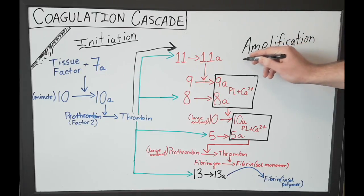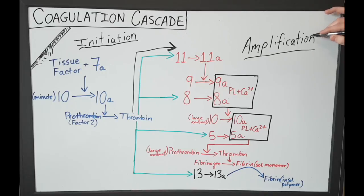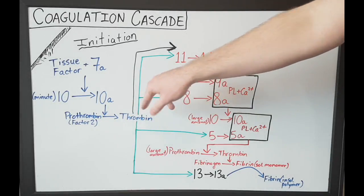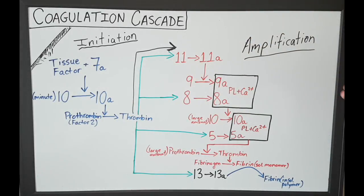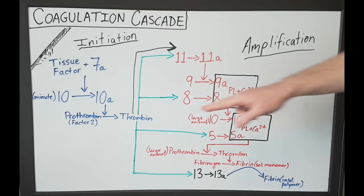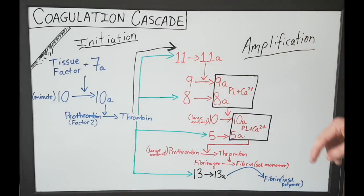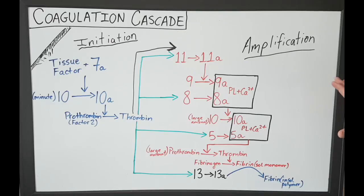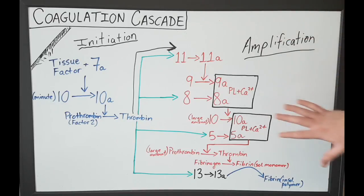So you come back to the same point where you had small amounts of activated factor 10 and small amounts of thrombin — now you've got large amounts. You've amplified the response, so this is called the amplification phase of the pathway.